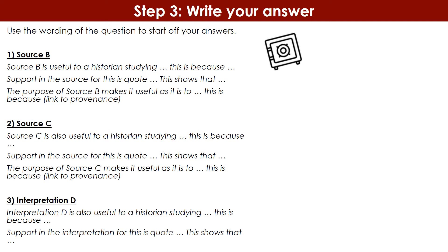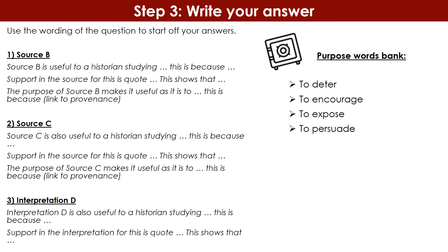When talking about the purpose of a source, you need to identify it using purpose words from your purpose word bank built up during revision. For example, the purpose might be to deter, to encourage, to expose, to persuade, or to indoctrinate — these are just some examples. Not every one will be relevant to every source; you need to think carefully. Once you've worked out the who, what, and when, you'll start thinking: if this is about terror from a Nazi perspective, maybe they're trying to deter opposition, or encourage support, or persuade and indoctrinate people. Select an accurate purpose word for your answer.